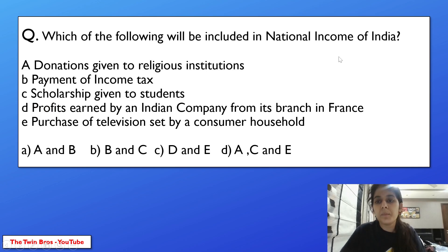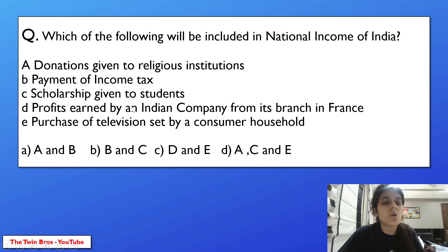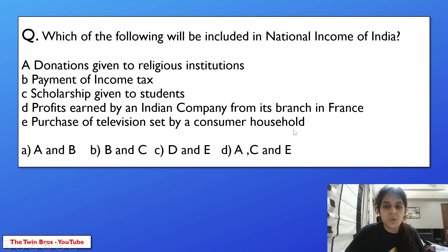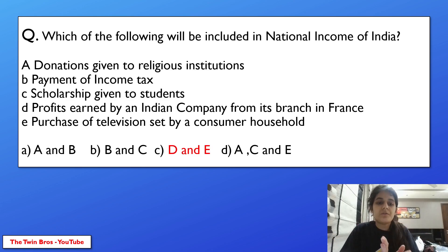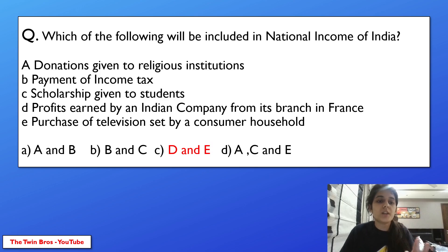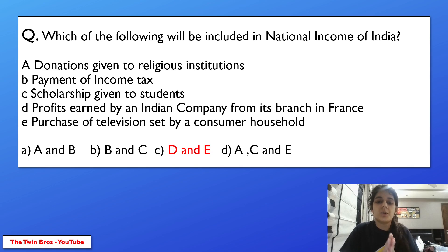Which of the following will be included in national income of India? Options: donations given to religious institutions, payment of income tax, profit earned by an Indian company from its branch in France, purchase of television set by a consumer household. The answer is option D — profit earned by an Indian company from abroad and purchase of a television set by a consumer household are counted in national income. The other options are not part of national income.